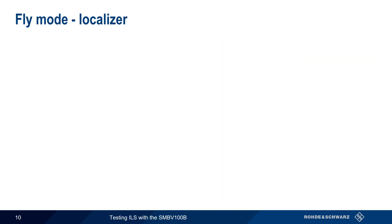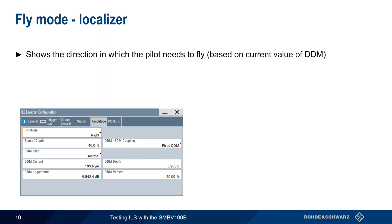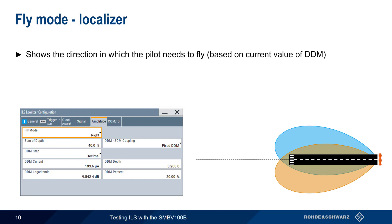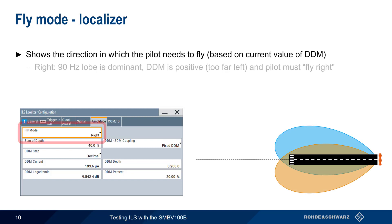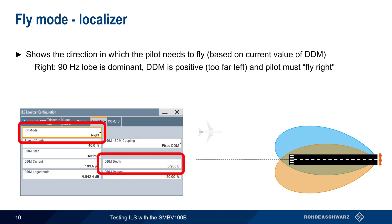DDM is closely related to something called fly mode. Fly mode is simply an indication of which direction the pilot needs to fly in order to intercept the localizer's centerline, based on the current value of DDM. If fly mode shows right, this means that the 90 hertz lobe is dominant, DDM is positive, and therefore the pilot must fly right to intercept the centerline.